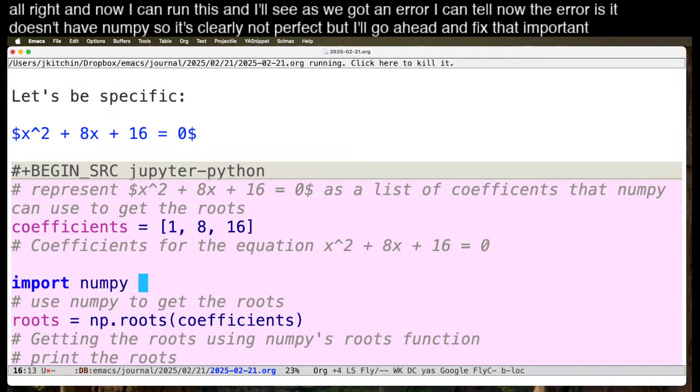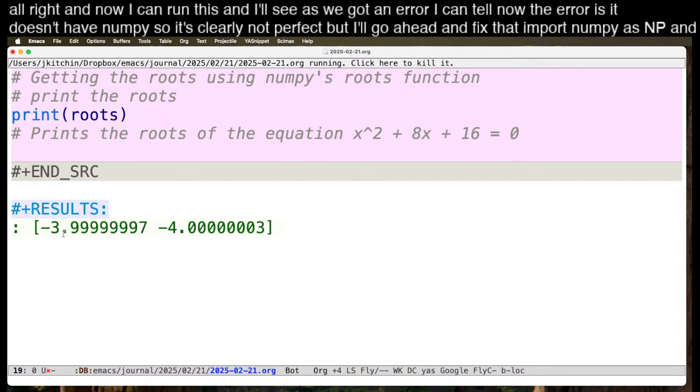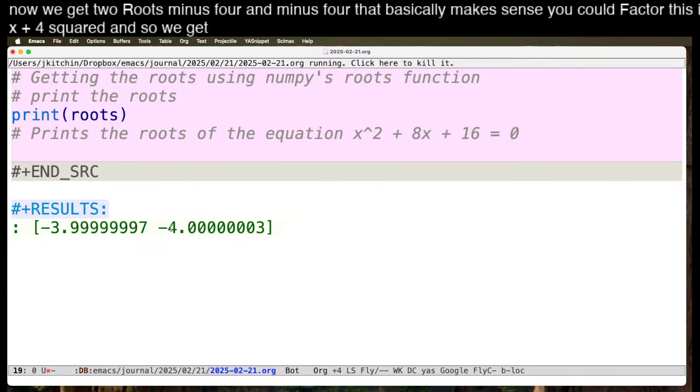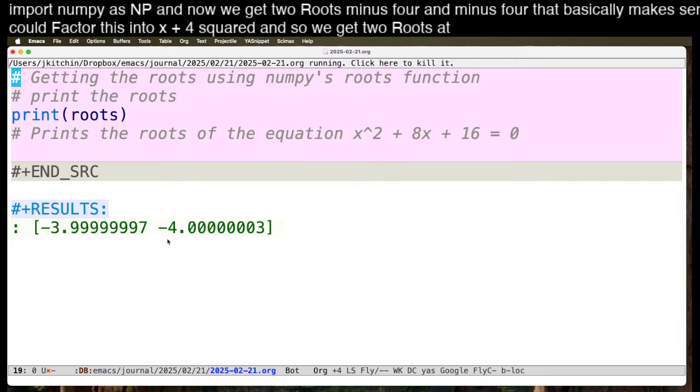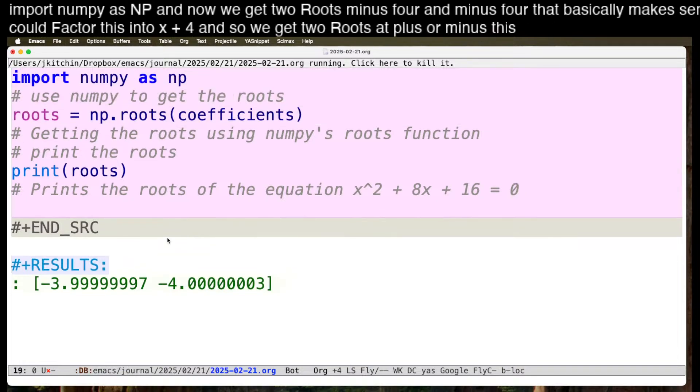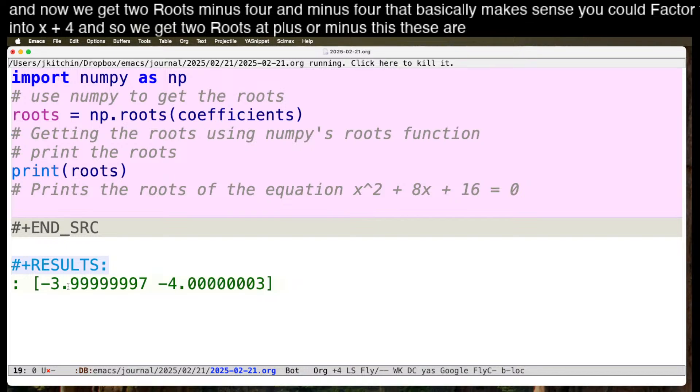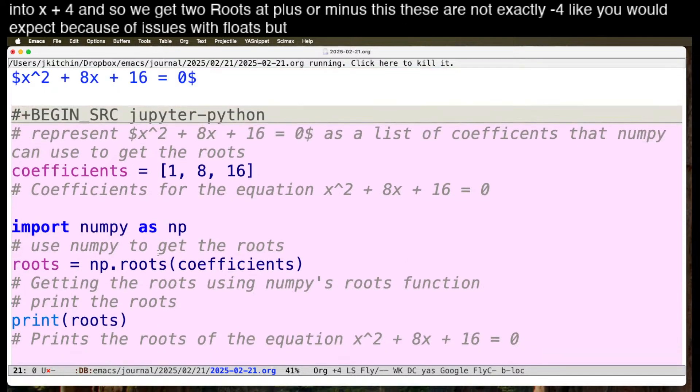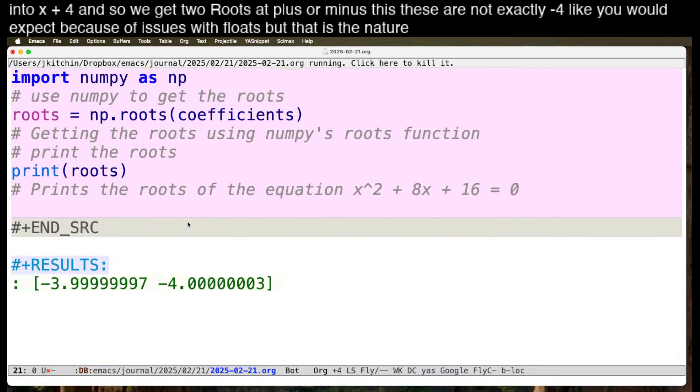Import NumPy as NP, and now we get two roots, minus 4 and minus 4, and that basically makes sense. You could factor this into x plus 4 squared, and so we get two roots at plus or minus this. These are not exactly minus 4 like you would expect because of issues with floats, but that is the nature of using NumPy.